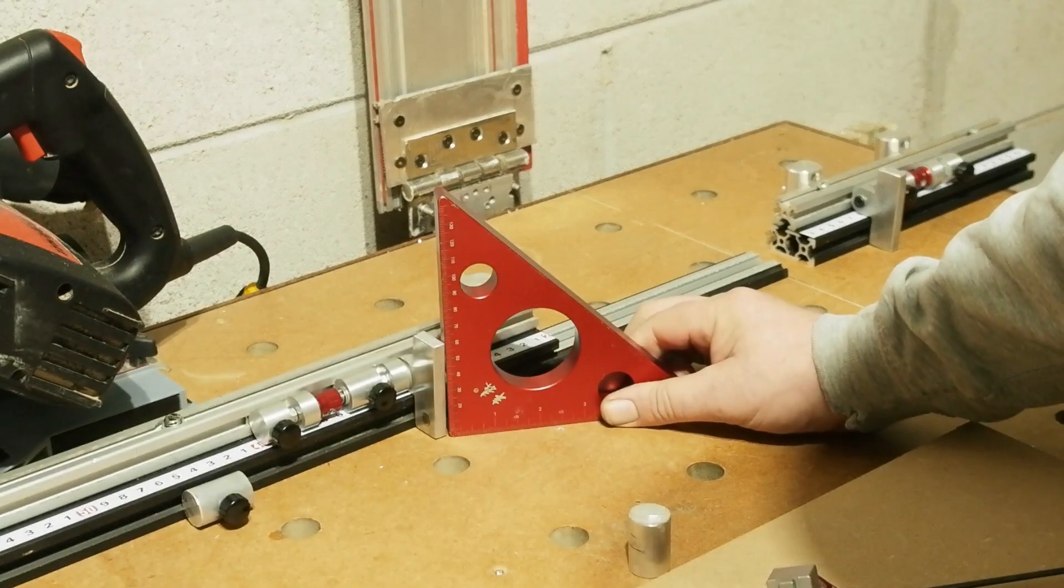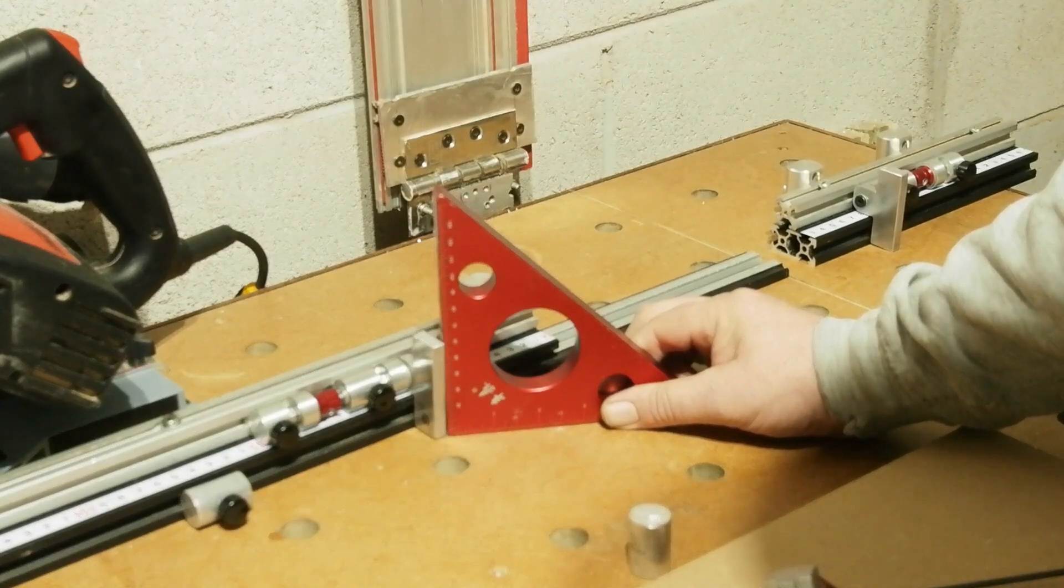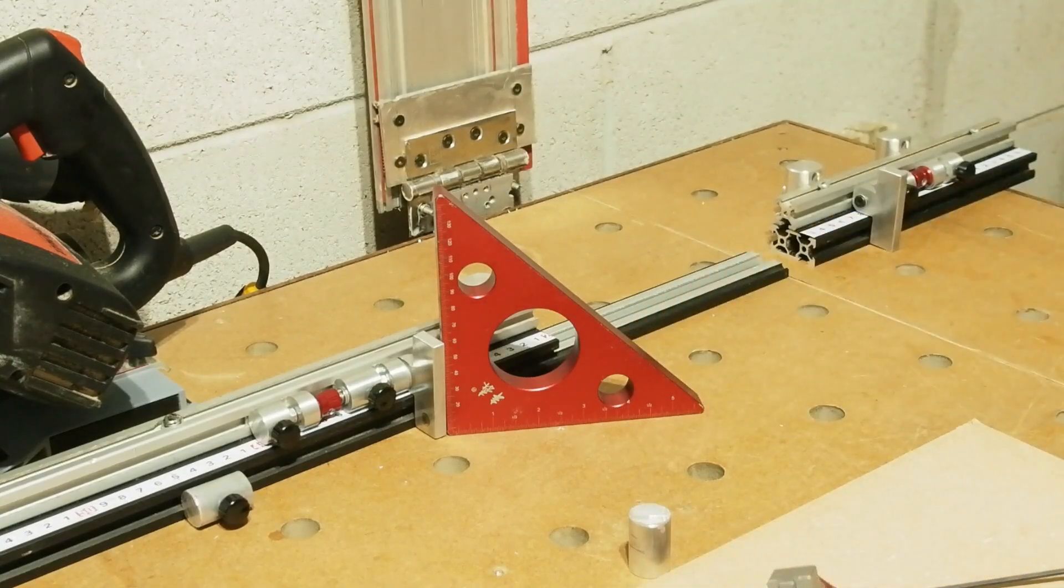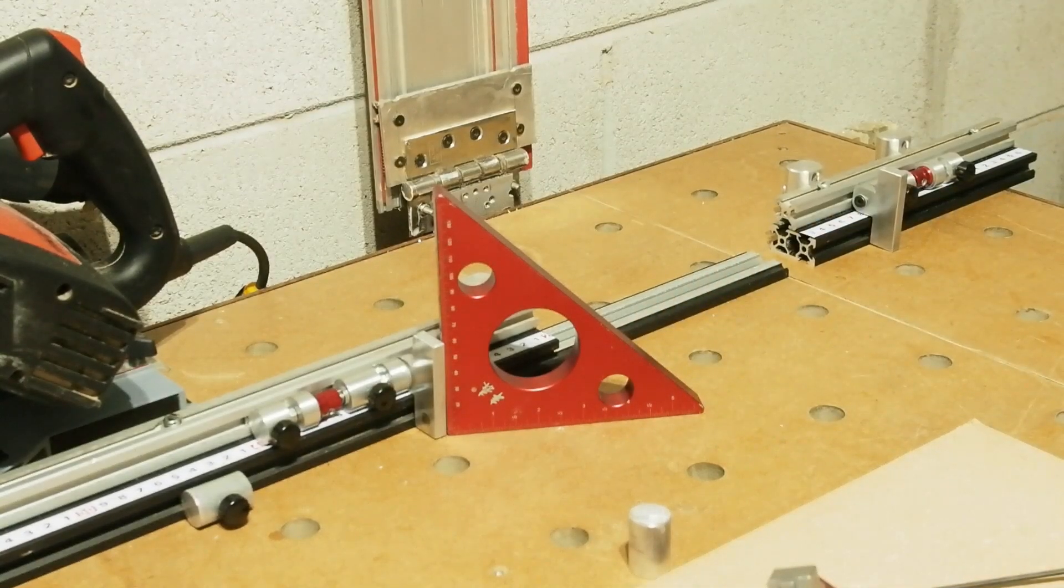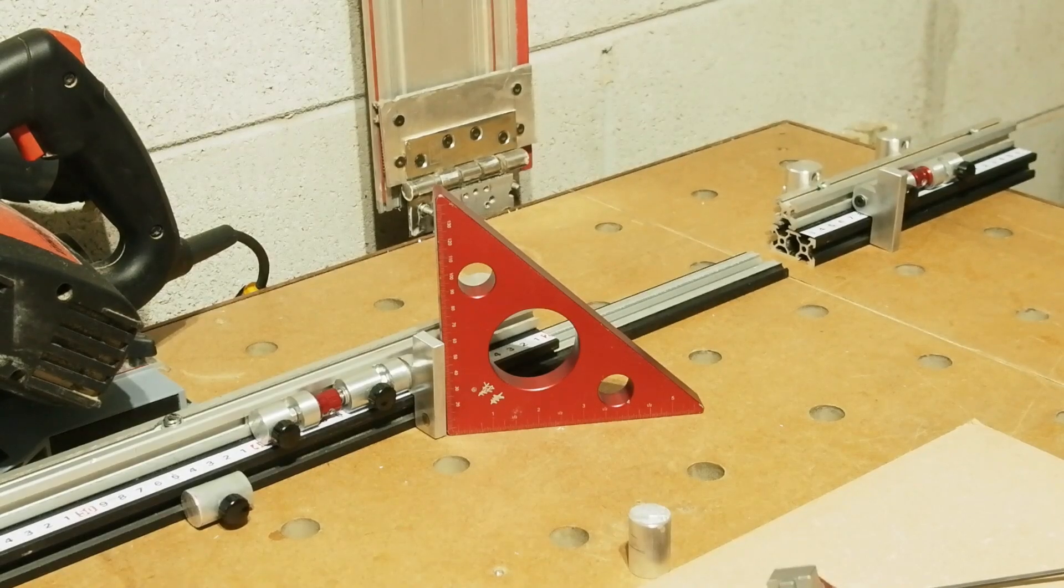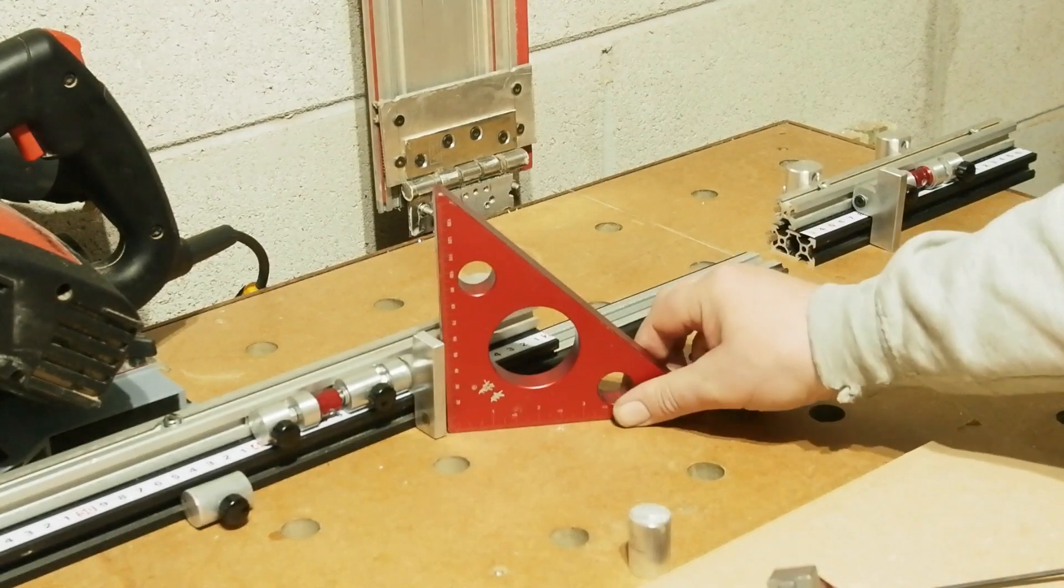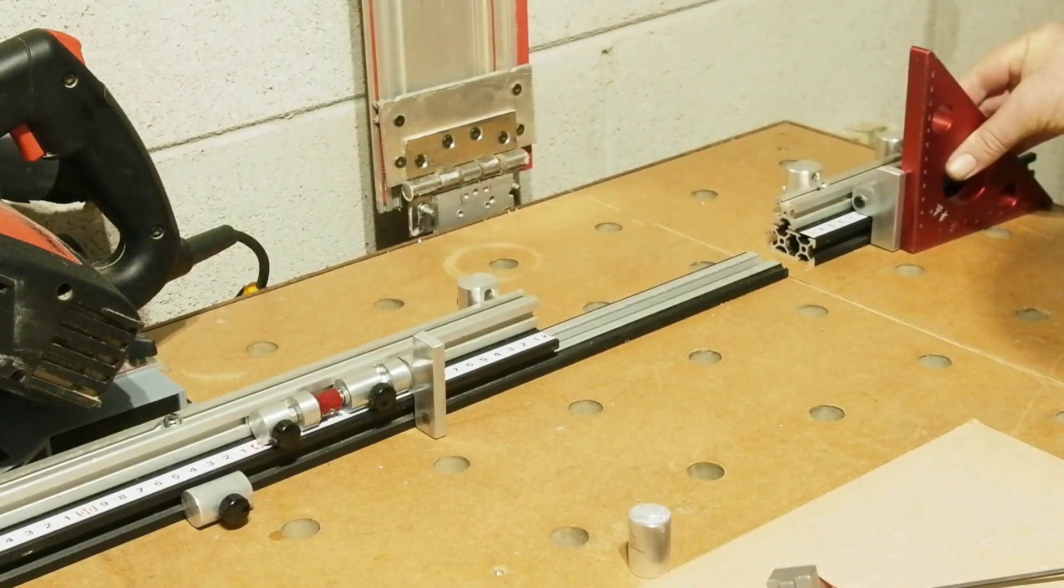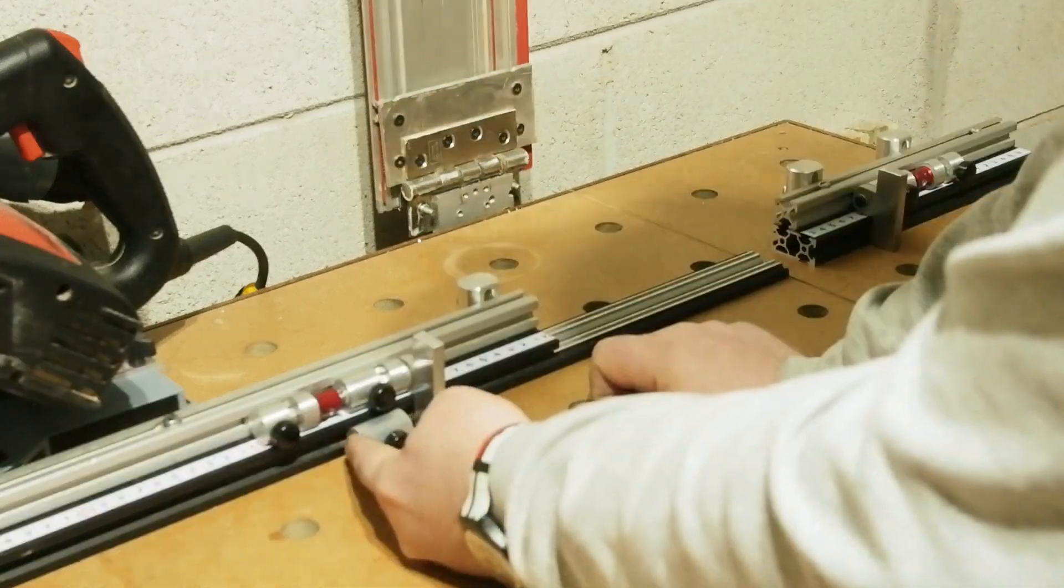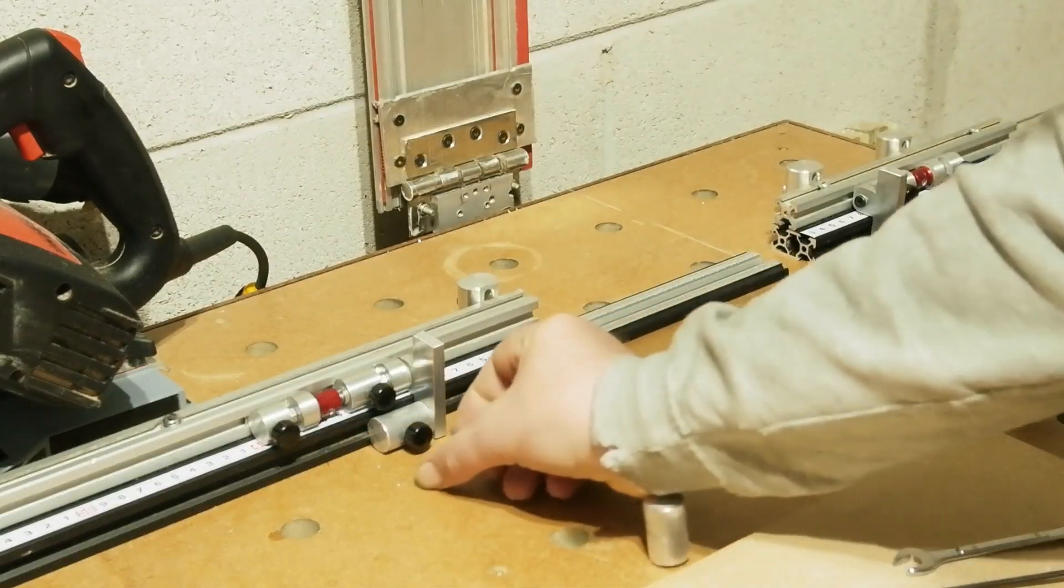Worth saying, in case any of you viewers fancy having a go at something like this, and please give me a shout out if you do, cheers, is that it's worth, by whatever means you have available, making doubly sure the end of the round stock that the flip stop itself attaches to is dead flat. You want your stop standing up straight, or you'll end up thinking your scale is telling you lies.